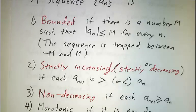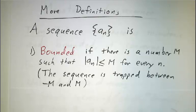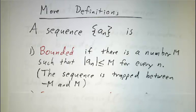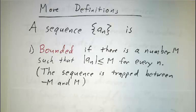Now with that under our belt, let's look at some more definitions. A sequence is bounded if it doesn't get too big — meaning it doesn't get too positive and it doesn't get too negative. If there's a sequence that never gets bigger than a thousand and never gets smaller than minus a thousand, it's bounded by a thousand. We say it's bounded if there's some number it doesn't exceed — maybe a thousand, maybe a million — but it doesn't get arbitrarily big and it doesn't get arbitrarily small.